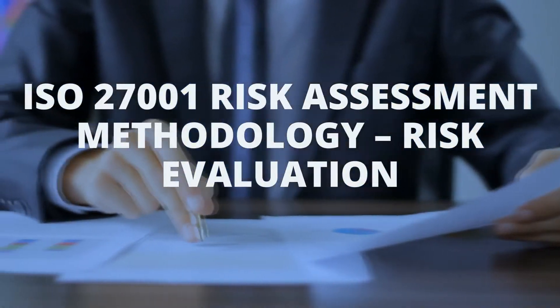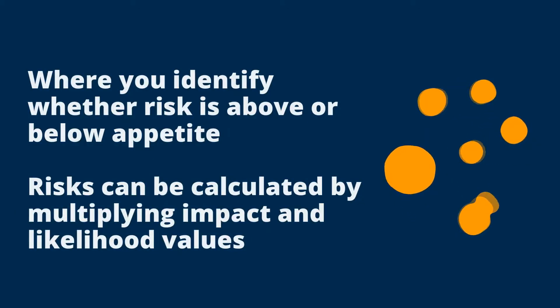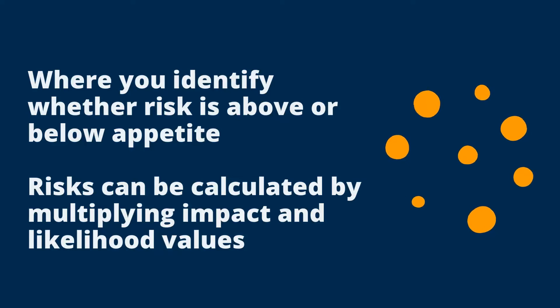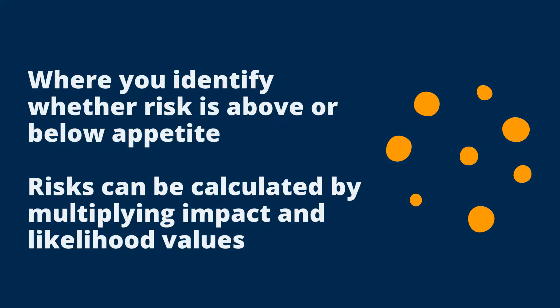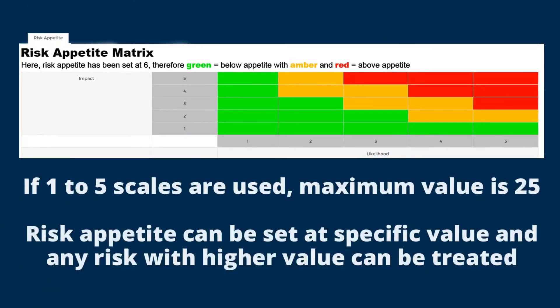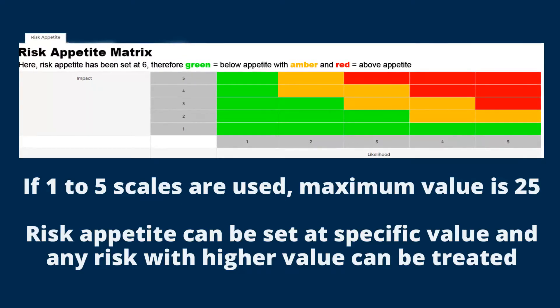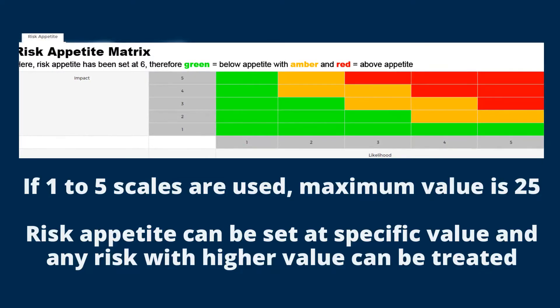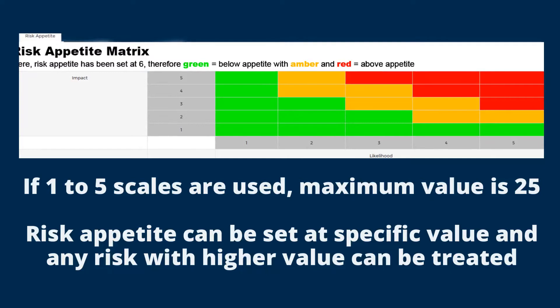Risk evaluation is a relatively simple process, as it requires you to identify whether or not the risk that you have identified is above or below appetite. To do this, we first calculate the value of the risk by multiplying the impact and likelihood values together. We have a range of possible values from multiplying the two one-to-five scales together. The appetite is stated within the methodology as a particular value on the five-by-five matrix — if a particular risk is above this value then it is above appetite and can be flagged for treatment; anything below appetite can be accepted and monitored for change.